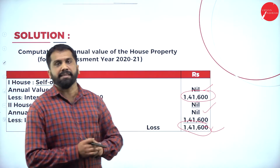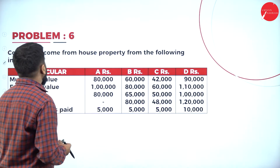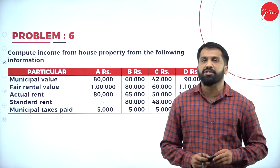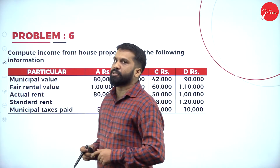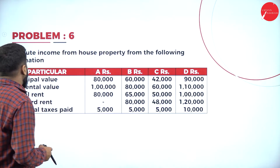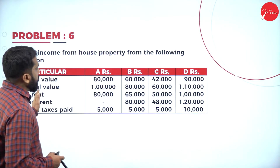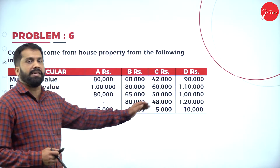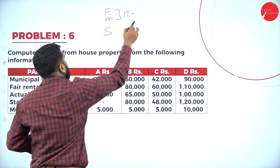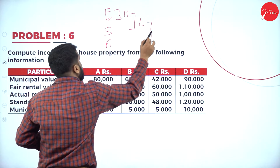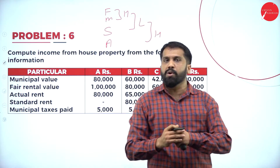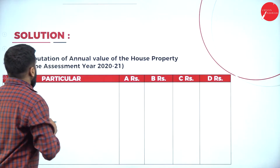Now we'll go to the next problem, which is very important. Compute income from house property from the following information — very easy, we can solve this in five minutes. The information given includes municipal value, fair rent, actual rent, standard rent, and municipal tax. Remember: fair rent or municipal value whichever is higher, standard rent whichever is less, actual rent whichever is higher.